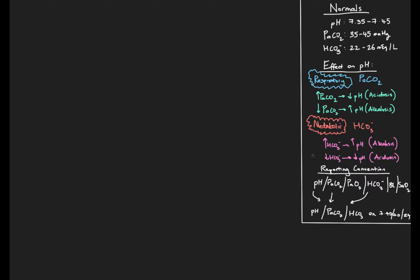The next important thing is the convention we use when reporting arterial blood gases. You'll often see them written with a slash between each value. We typically report pH first, followed by a slash, then pCO2, slash, then PaO2 - which is an oxygenation index we haven't introduced yet and won't cover in this video. Then the bicarb, the base excess, and the SaO2, which is the arterial oxygen saturation. For our acid-base examples, we're focusing on pH, pCO2, and bicarb.